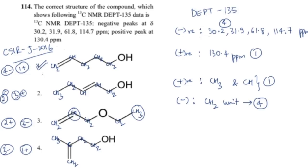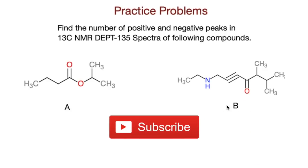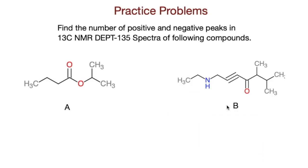I will now give you two practice questions. Find the number of positive and negative peaks in the carbon-13 NMR DEPT 135 spectra of compound A and compound B shown on screen. Post your answers in the comment section — it will be a self-assessment to see how much you've understood. That's all for this video. Thank you for watching, give it a thumbs up, and subscribe to the channel for more updated videos.